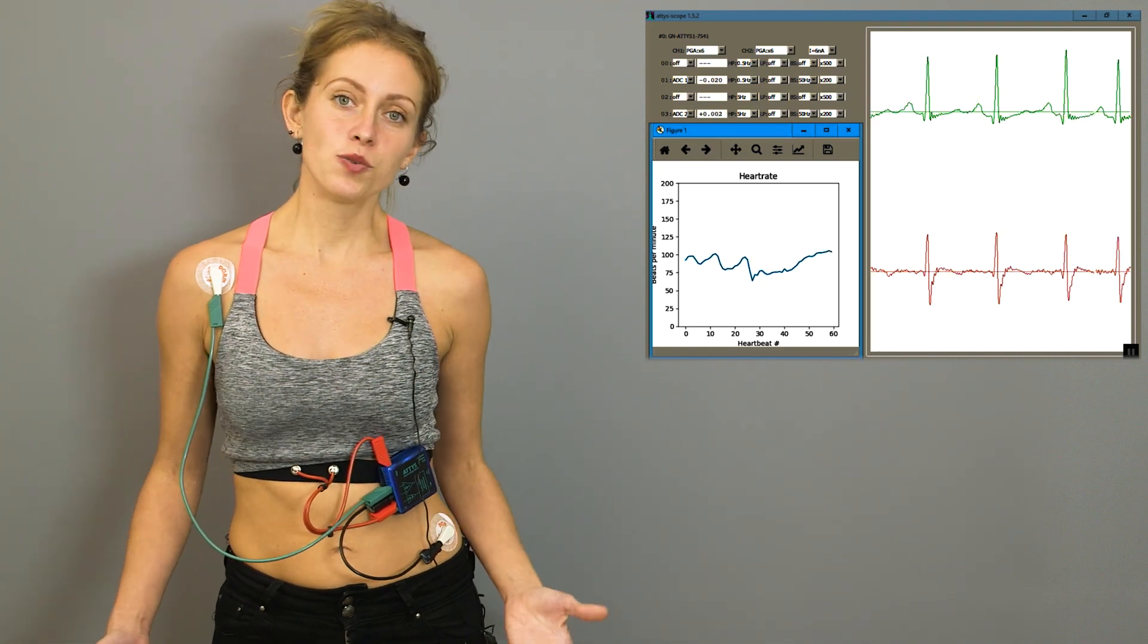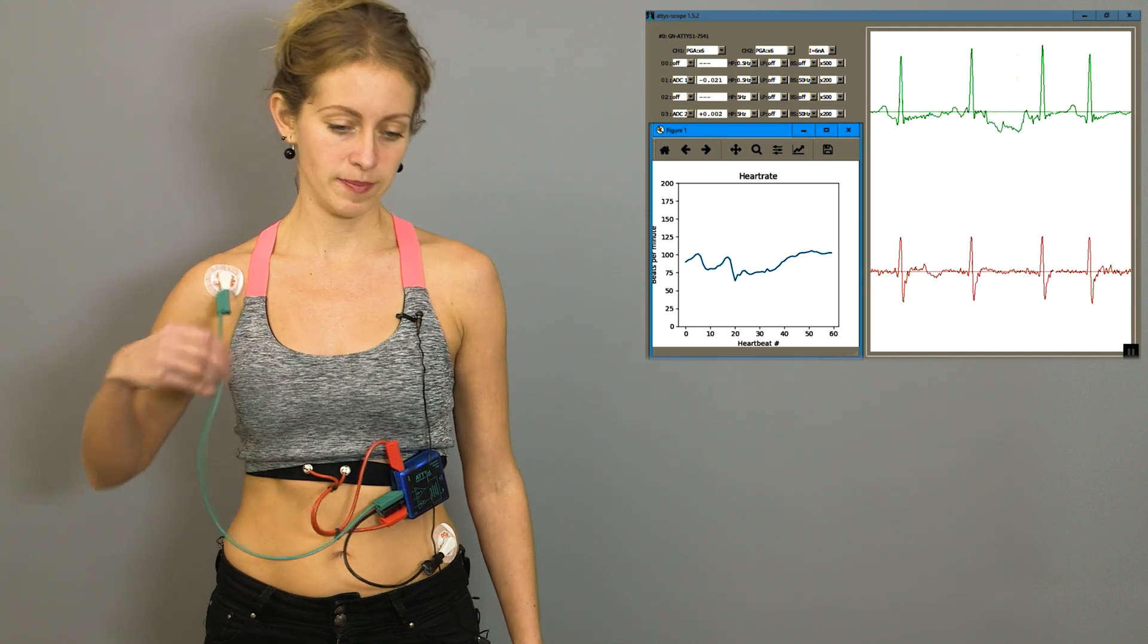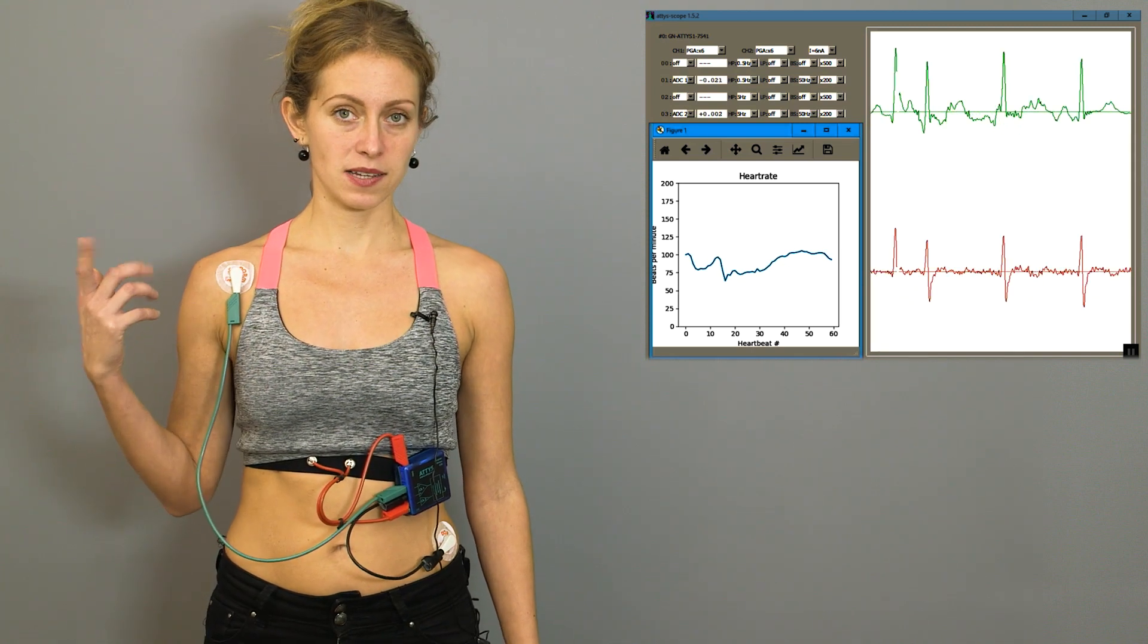As we have seen, there are two main reasons for ECG artefacts: cable movement and muscle activity.